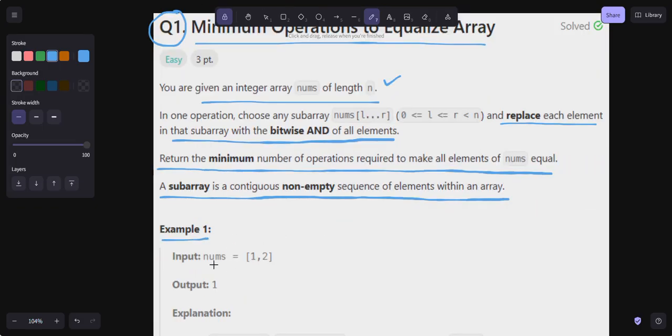In example 1, nums is [1, 2]. If I treat this as my l and this as my r, what is the bitwise AND of these two? I'm going to write 1 in binary form and write 2 in binary form, and the bitwise AND of these two is 0.